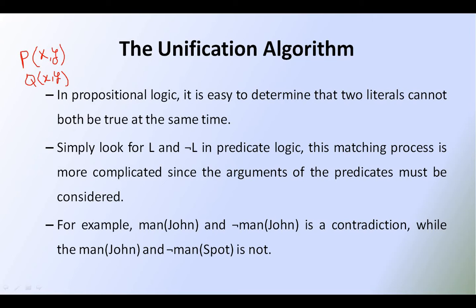Simply, looking at L and negation L in the predicate logic, this matching process is more complicated since the arguments of the predicate must be considered. For example, I consider this as L1 and this as negation L1. So we have to match these two literals by the name of the literals, as well as the number of arguments, the type of arguments, and whether both arguments are the same or not. It is a bit complicated process.